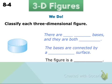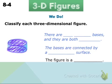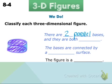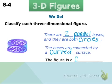The next figure has a base at the top and also a base at the bottom — two bases. Two parallel bases both shaped like circles. The bases are connected by a curved surface. Because we have two circular bases with a curved surface, this is going to be called a cylinder.